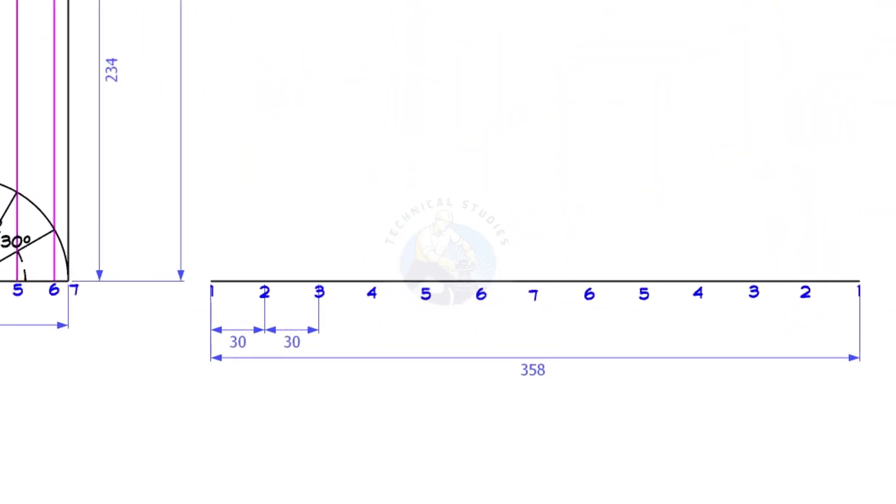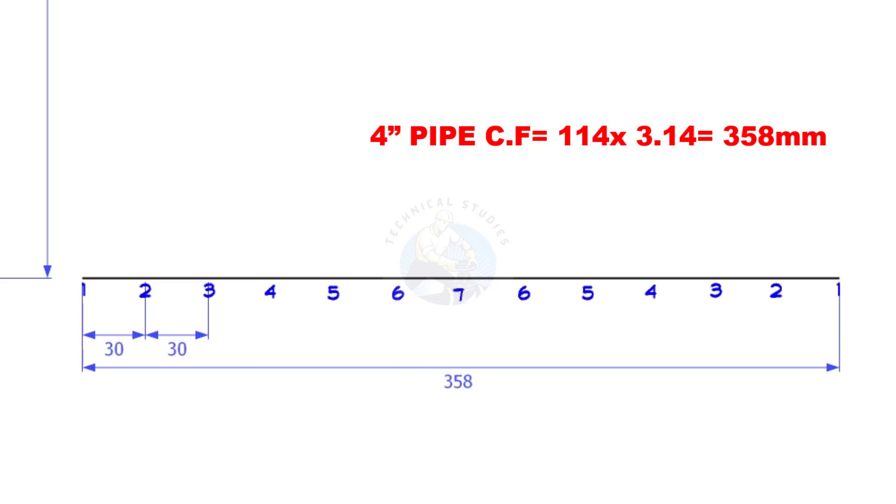Draw a straight line. The length shall be 358 millimeters, that is the circumference of the trunnion. Divide this line into 12 equal parts.